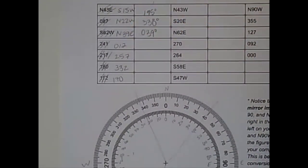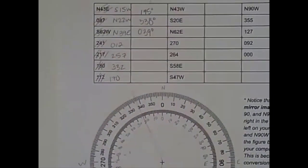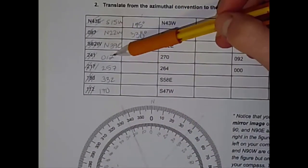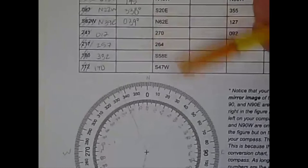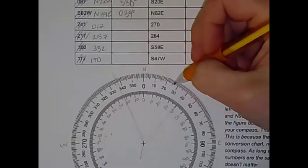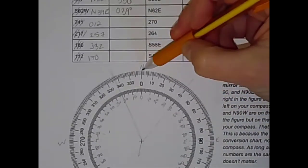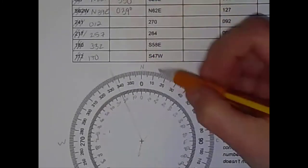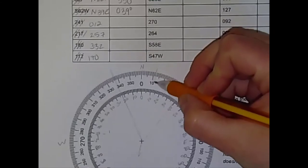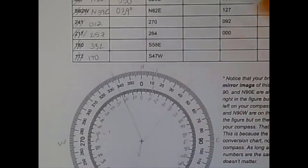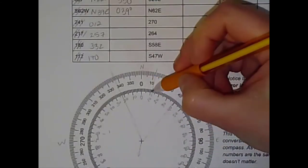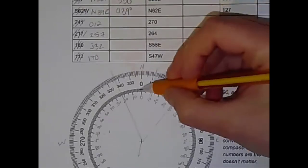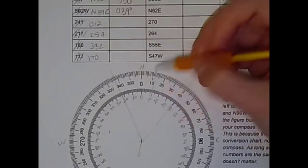Next up is 012. So notice that 012 is an azimuthal notation. So we start on the outside here and we're going to work our way in. 012 is 12. So that's our orientation. And that's 12. So that's north 12 east.